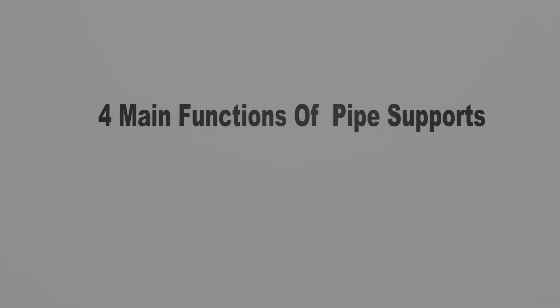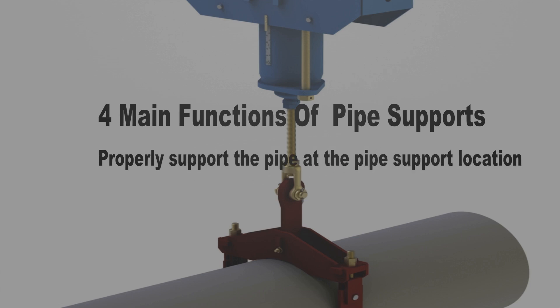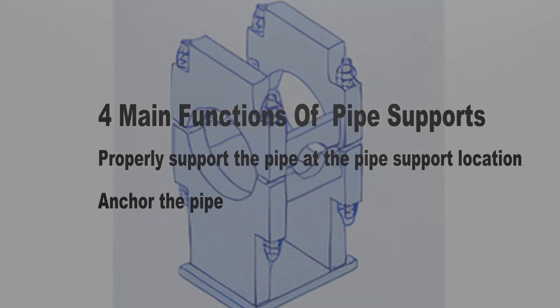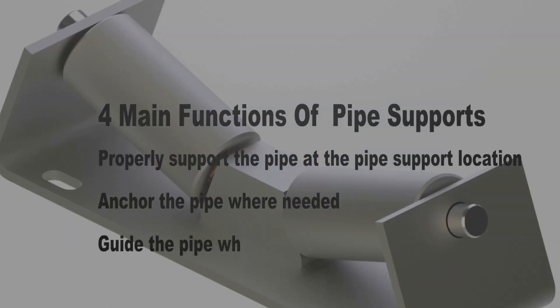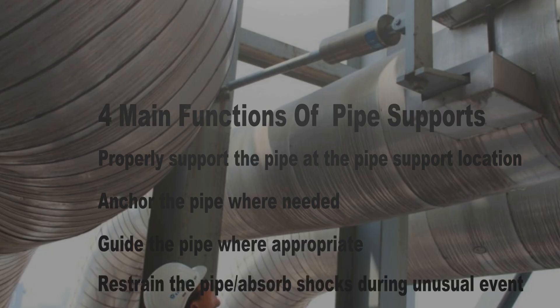The four main functions of pipe supports are: one, properly support the pipe at the pipe support location; two, anchor the pipe where needed; three, guide the pipe where appropriate; and four, restrain the pipe and absorb shocks during unusual events. Different types of supports are used depending on what the piping engineer is trying to do at the support location.